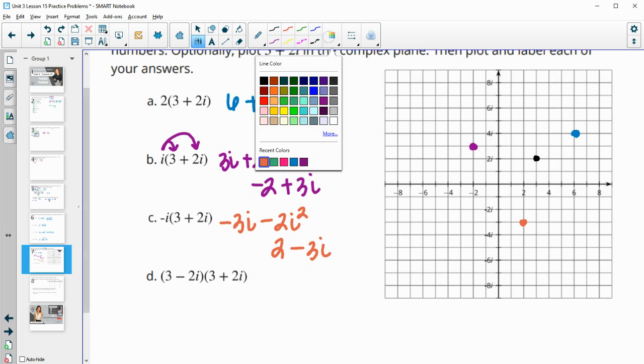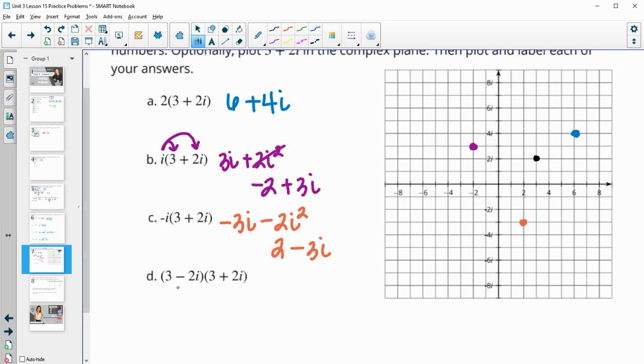And then in this final one, we need to multiply these together. So we'll do 3 times 3, which is 9. 3 times 2i, which is 6i. Negative 2i times 3, which is negative 6i. And then negative 2i times 2i, which is negative 4i squared. So these middles will cancel. Also, i squared is negative 1. So negative 1 times negative 4 is positive 4. And then 9 plus 4 is 13. That's going to be well off the grid over here.